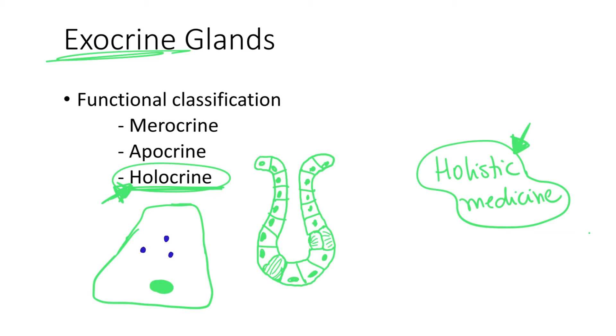So, exactly what happens in the holocrine gland is that this gland stores the product in the cytosol. And as the cell matures, it ruptures and it becomes the secretory product. And because the cell ruptures, there is a considerable amount of lipids that is coming from the plasma membrane of the cell and also from the intracellular membranes of the cell.